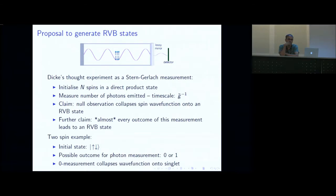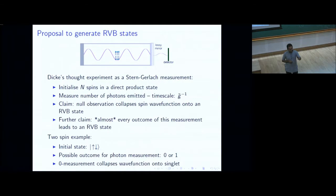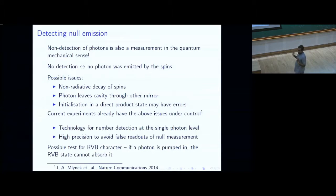I'm going to generalize this to N spins and show that instead of a singlet you get a much more exciting, interesting state. Initially there are no photons; I create a direct product of spins and observe how many photons come out — those photons come from the spins. Non-detection of photons is also a quantum measurement: if you see no photons, it means no photon was emitted by the spins.